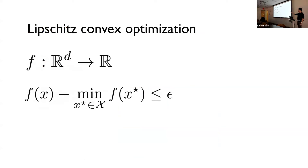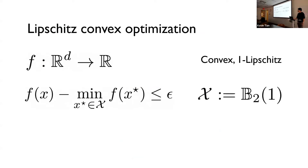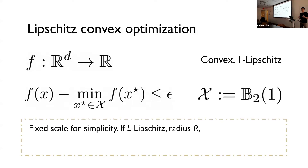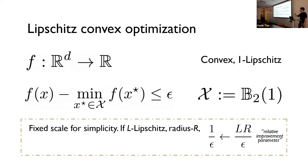To start, let me say something about the problem we're studying and motivate it. This talk is focused on an abstraction of stochastic convex optimization, beginning with Lipschitz convex optimization. The goal is to minimize a convex function over d dimensions to suboptimality error epsilon, competing with the best point in some set. I'll focus on the case where f is 1-Lipschitz and the set x has bounded domain in Euclidean norm by 1. For more general functions, use the scale-invariant relative optimality notion: wherever I write 1 over epsilon, write LR over epsilon.